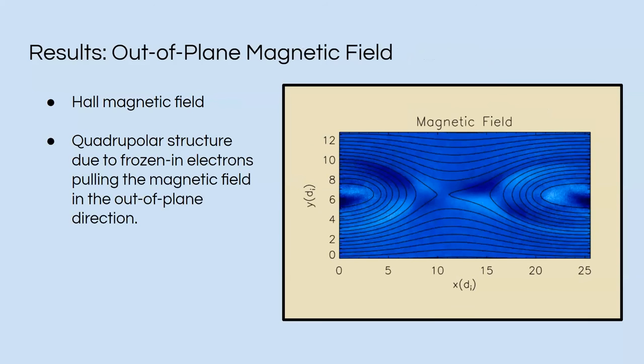And finally, here is the magnetic field. It represents the Hall magnetic field. It's a quadrupolar structure, which is due to the frozen-in electrons pulling the magnetic field in the out-of-plane direction.